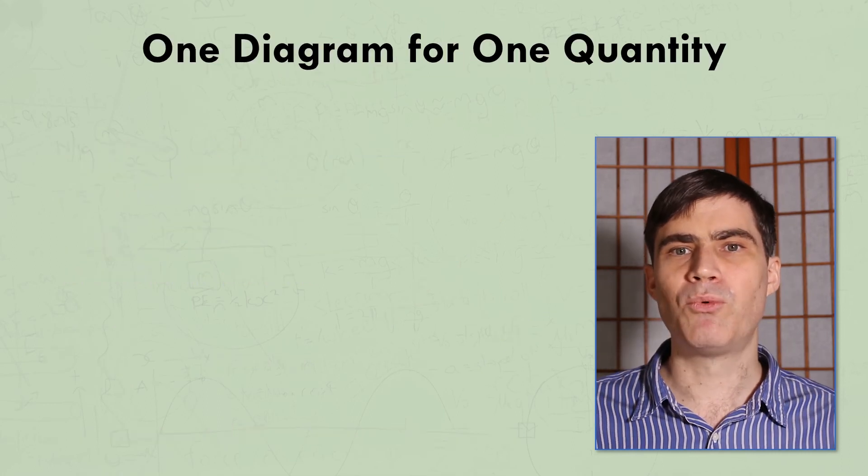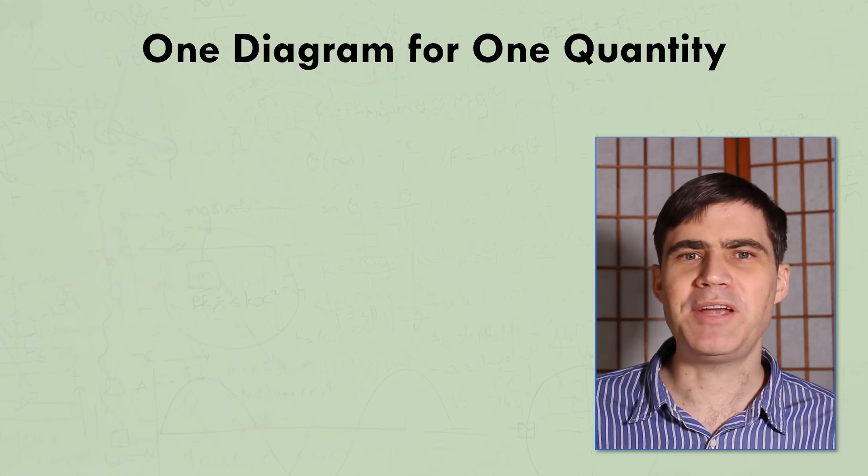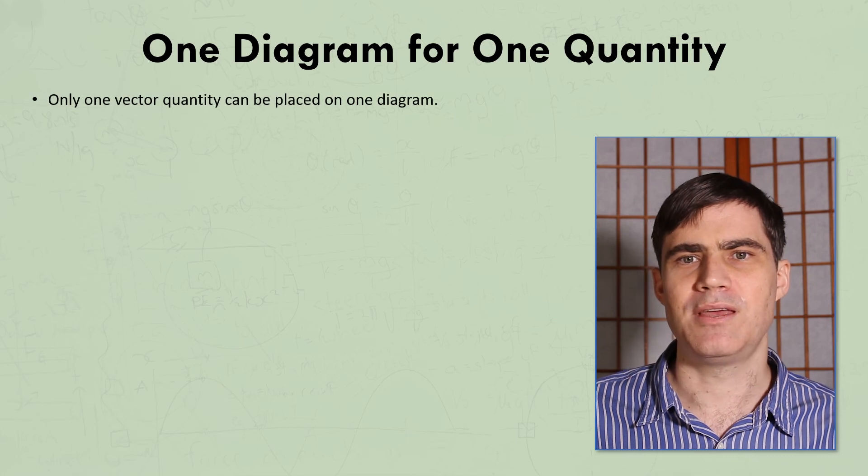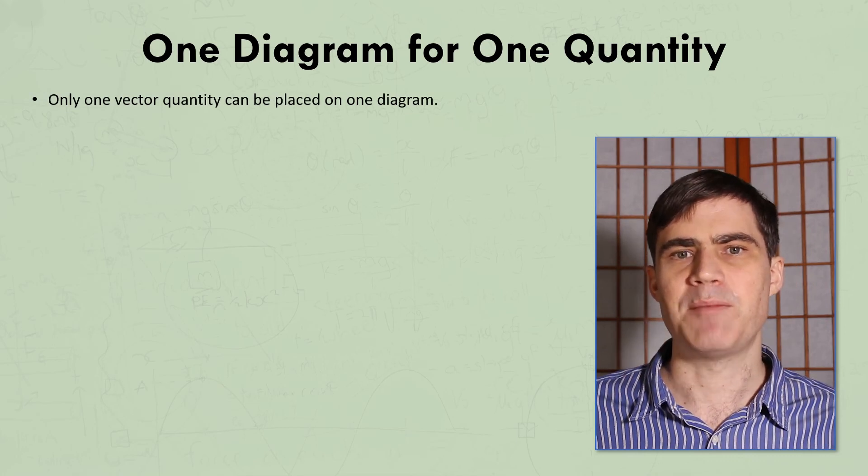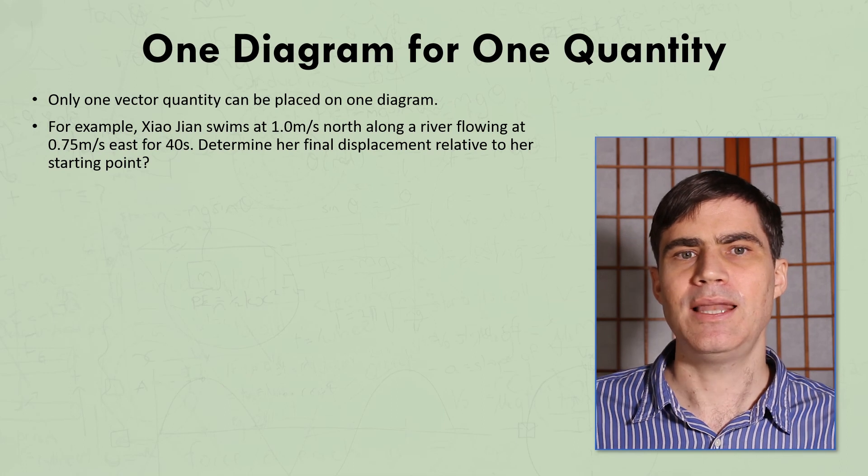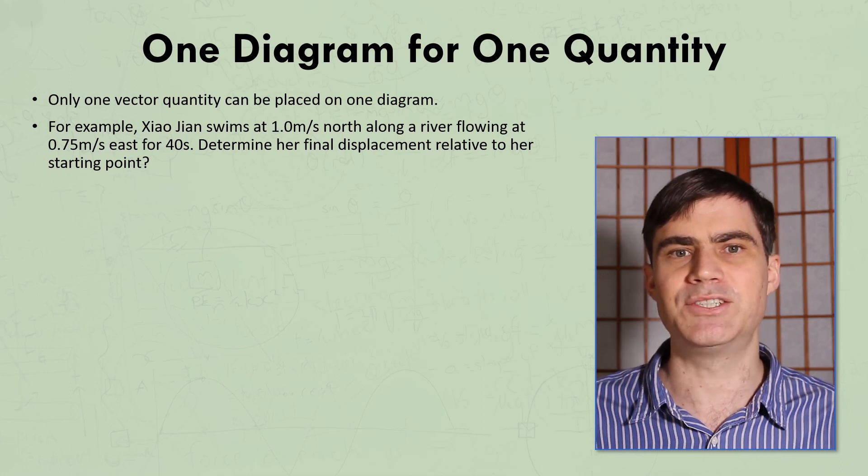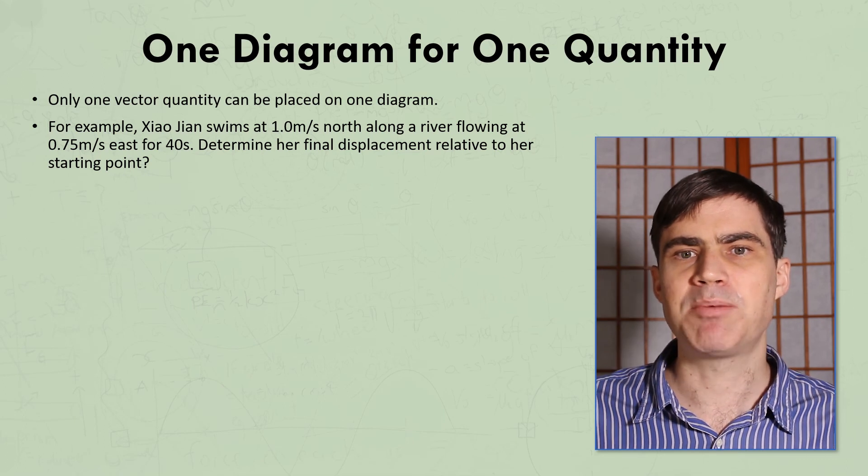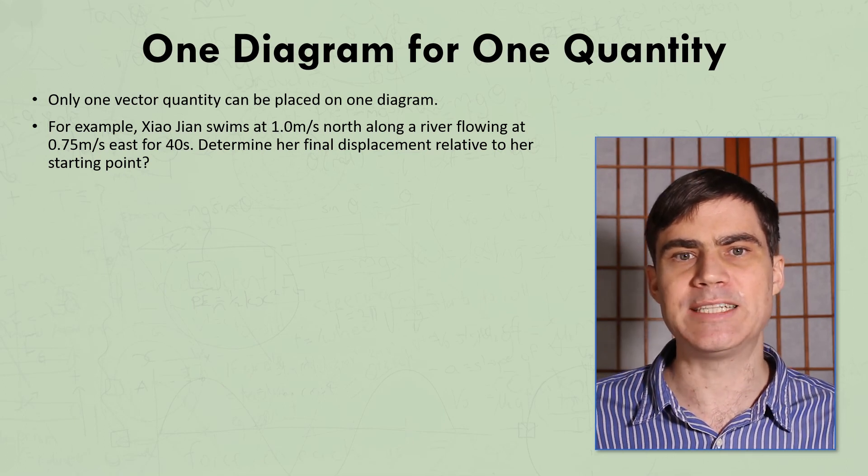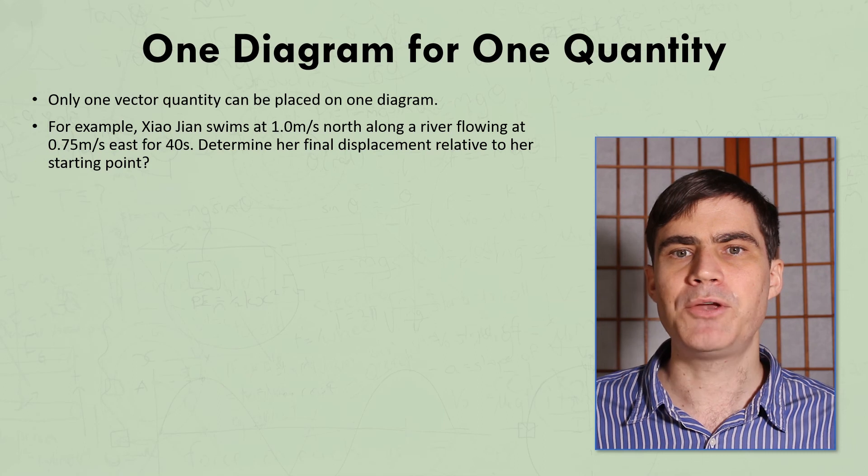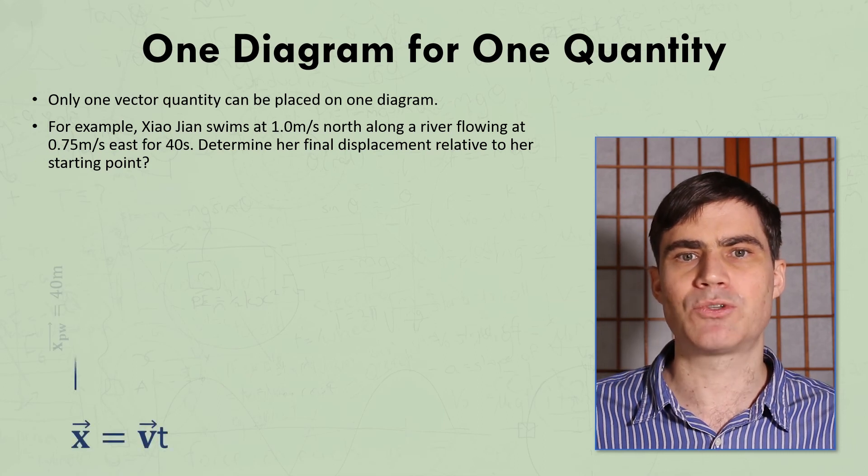I'd like to finish with a warning of sorts. We can draw a vector diagram for any vector quantity, and sometimes we can choose which one to use. For example, to lead into my next video, let's say we have a relative velocity problem of a person swimming north across a river flowing east for 40 seconds. I'll explain what these symbols like XPG or XPW mean next time. But we could either calculate how far she will swim across the river,